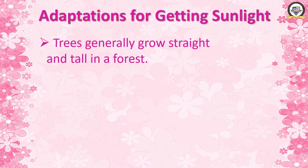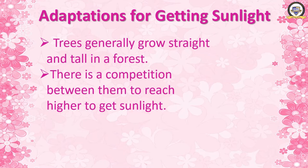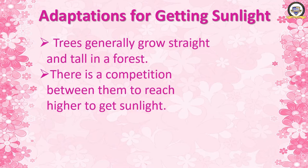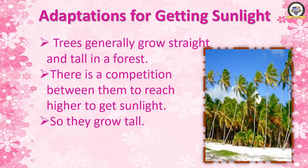Trees generally grow straight and tall. In a forest, we can see very tall trees. There is competition among them to reach higher to get sunlight. In forested regions with thick vegetation, it is very difficult for smaller plants to get sunlight, so they try to grow very tall.